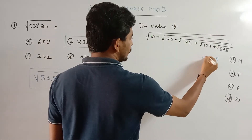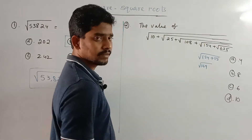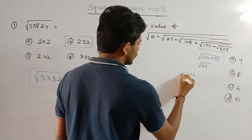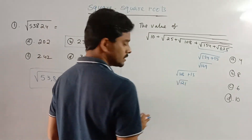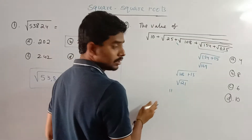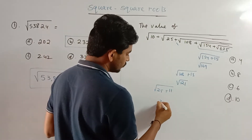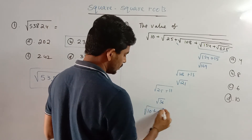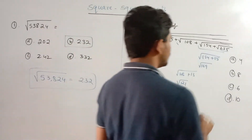√225 equals 15. For 154: 154 plus 25 is 169, and 169 is 13 squared, so that gives 13. Then 108 plus 13 is 121, which is 11 squared, so that gives 11. Next, 154 plus 25 gives 36, which is 6 squared, so that gives 6. Adding 10 gives root 16.